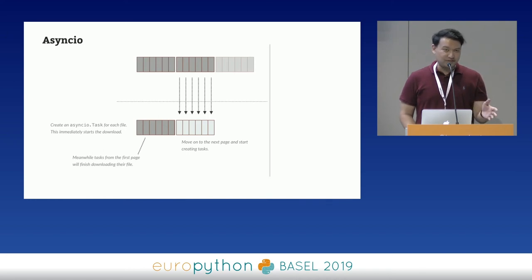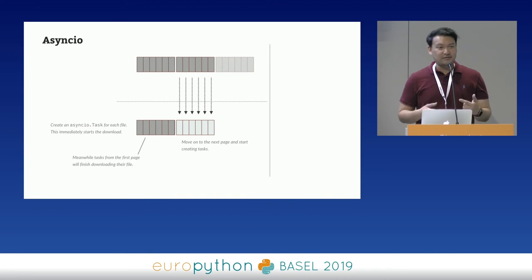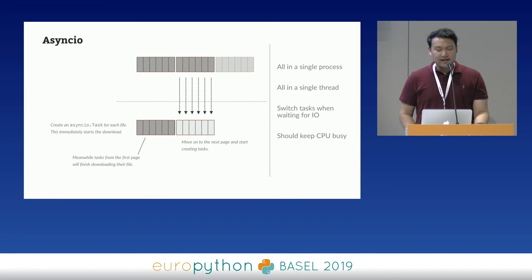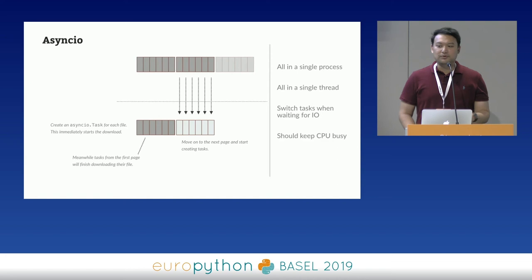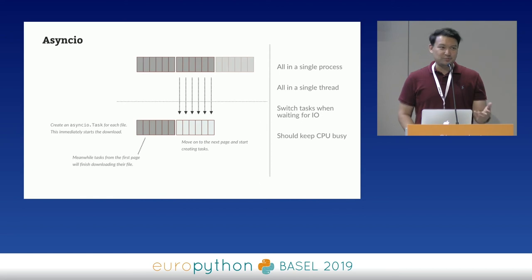Some of the benefits of async I/O are mostly in how it runs. Because we're creating a new task for each request — something we really couldn't do with multithreading where we don't want a new thread per file — the task object is much more lightweight. Async I/O runs in a single process, a single core, and switches tasks when waiting for I/O or whenever something yields. In theory, this should keep the CPU busy and give us much more efficient use of a single core.